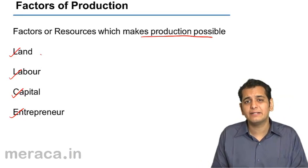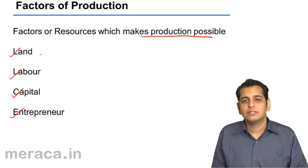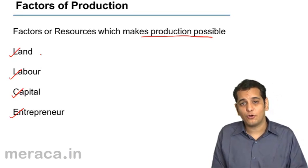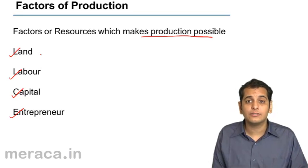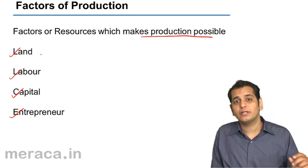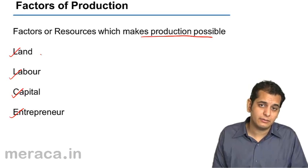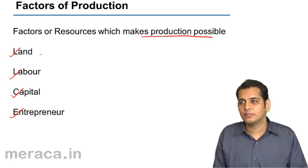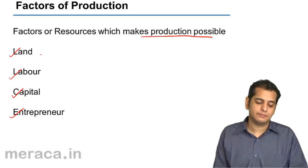Now, what is land? Land is the surface of the earth. Land is also the soil on earth. Land also includes other resources like water and air on earth. All these together form what we call as land.